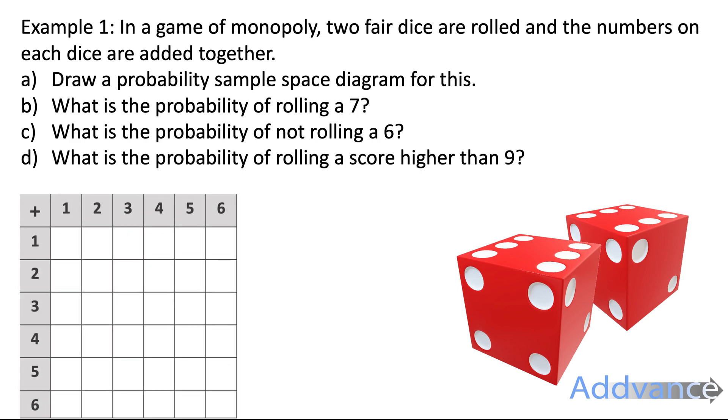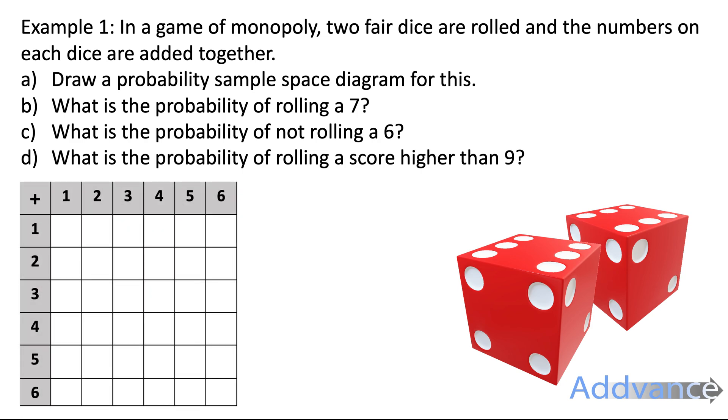We're going to draw a table like this, and this has the top row which shows us all the possible outcomes for the first dice, and the first column shows us all the possible outcomes for the second dice.